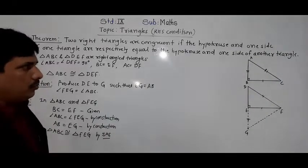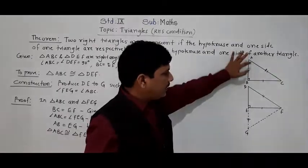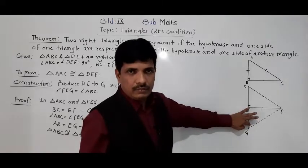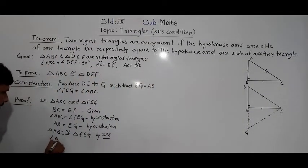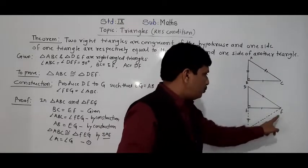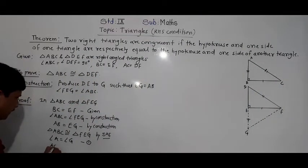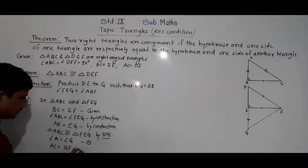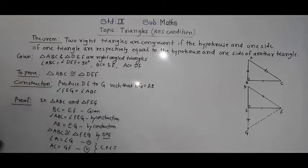Since triangle ABC and triangle FEG are congruent, by CPCT we can say: angle A is equal to angle G — this is result one. And AC is equal to GF — this is result two. The reason for both is CPCT: corresponding parts of congruent triangles are equal.